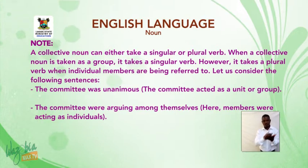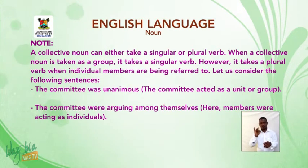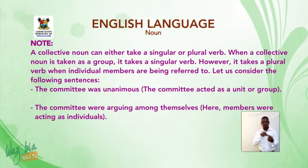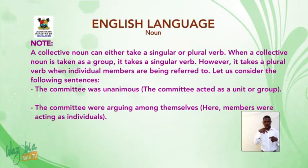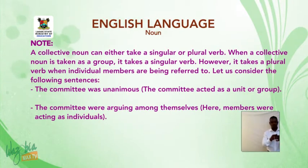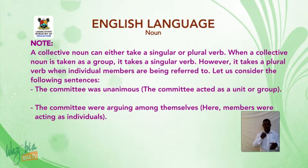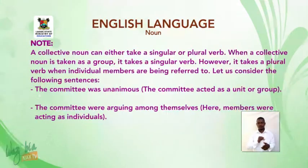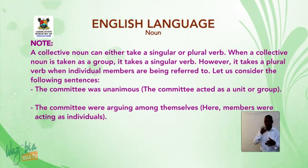Note: a collective noun can either take a singular or plural verb. When a collective noun is taken as a group, it takes a singular verb. However, it takes a plural verb when individual members are being referred to. For example: 'The committee was unanimous' — the committee acted as a unit or group. 'The committee were arguing among themselves' — here, members are acting as individuals.